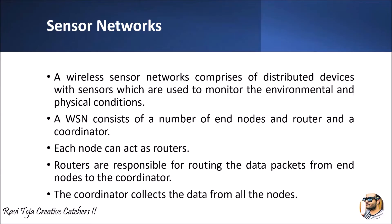So how does a sensor network actually work? A wireless sensor network consists of a number of end nodes, and these end nodes are connected to a router, and all the routers are connected to a coordinator. The first thing required to measure a physical quantity or natural element is the sensors. These sensors are connected to a controller-kind of device setup which is used to communicate with the router.